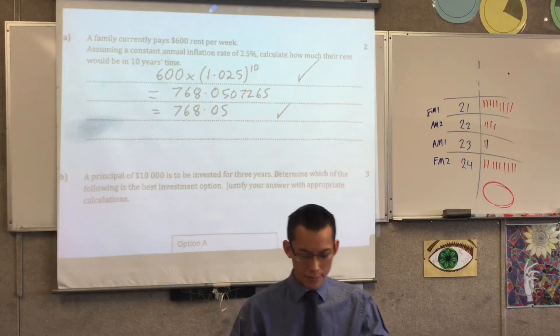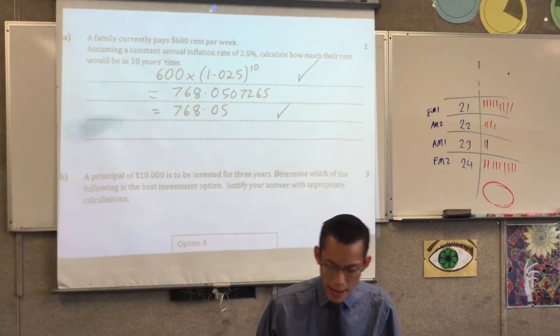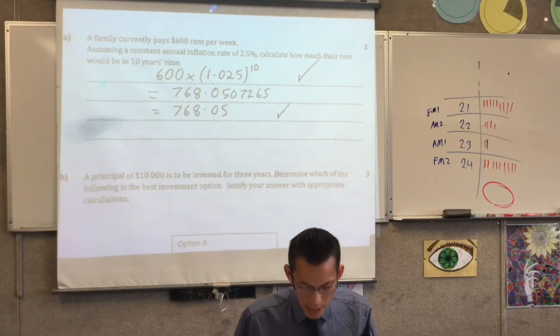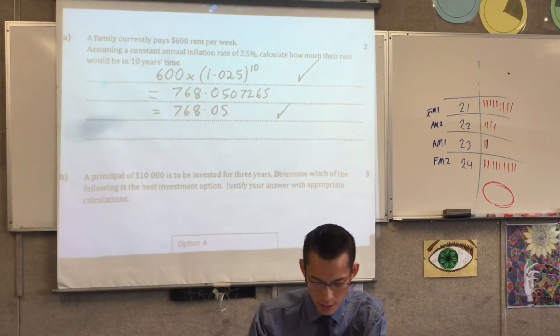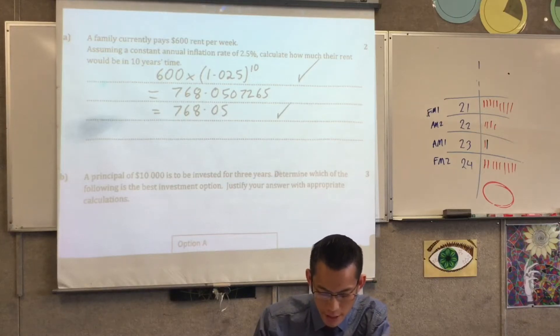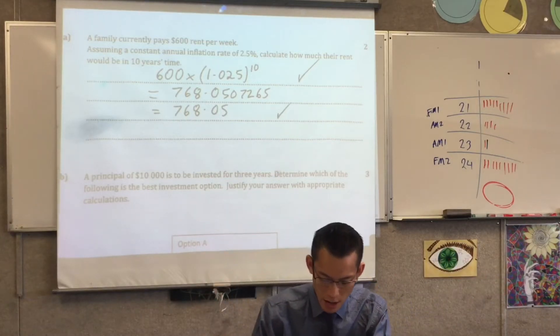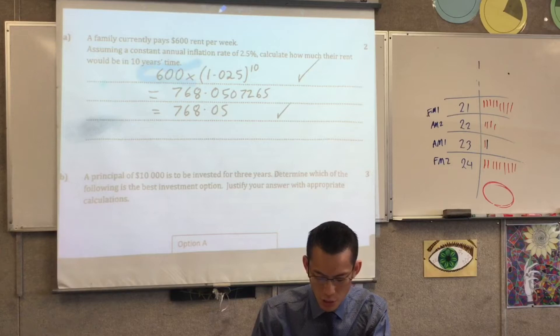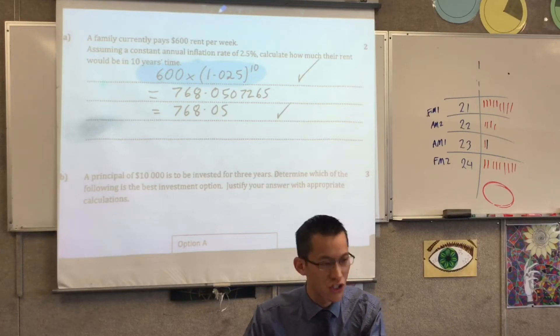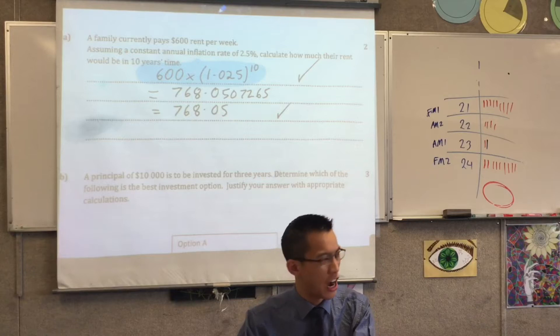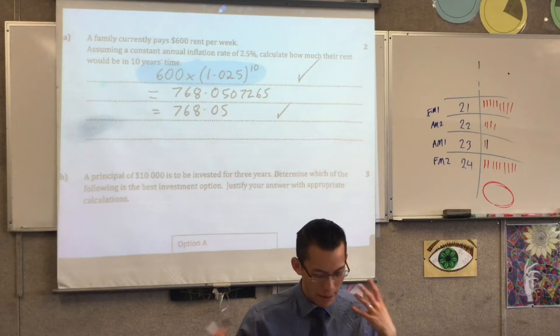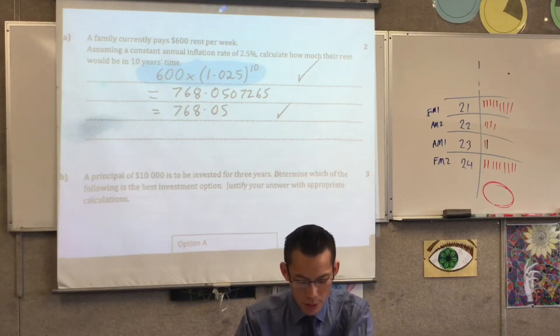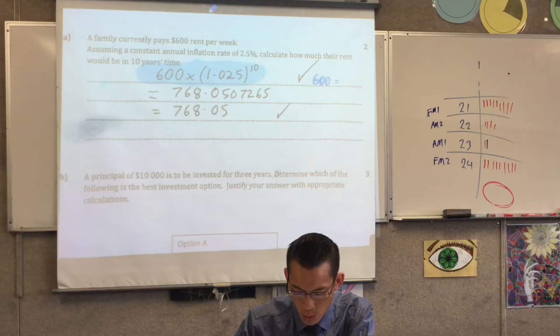Here we go. A family currently pays $600 rent per week assuming a constant inflation rate. When I skimmed through, as a class we did this really well. The formula data sheet gives you this formula, so you can pretty much just use it. It was pretty hard to get it wrong if you had that formula and then went to your calculator. People who got it wrong maybe didn't know how to use that formula, or they were solving something else, like writing 600 equals P times 1.0, so they were solving for something else and got confused that way.